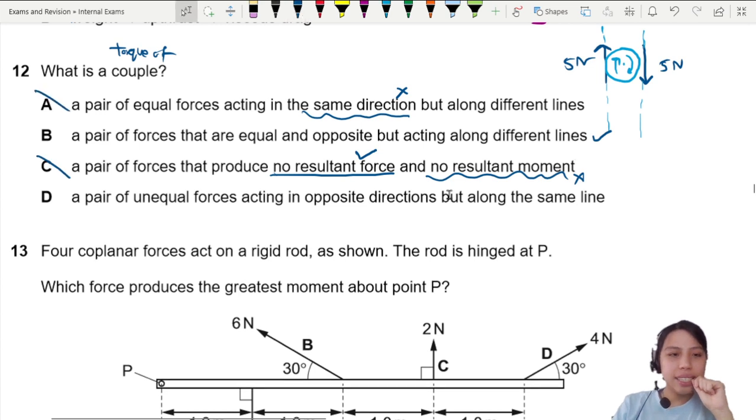D: a pair of unequal forces. Okay that's wrong. If you're a couple you gotta have the same magnitude, all right, acting in opposite directions but along the same line. Okay, same line cannot. You need different lines.